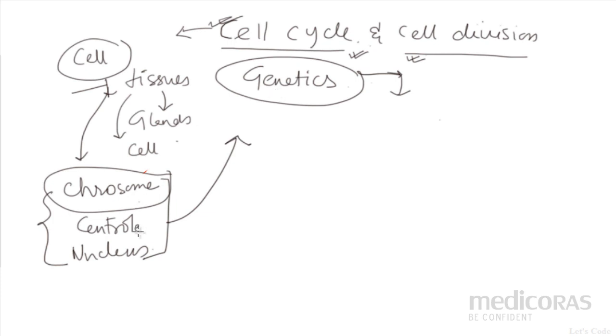So what do you need to do? First, go through these three topics only. Then you can move to this chapter, Cell Division and Cell Cycle. And after that, you can go for genetics. So let's start with Cell Division and Cell Cycle.